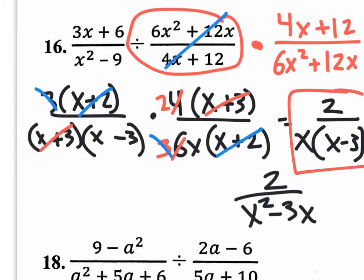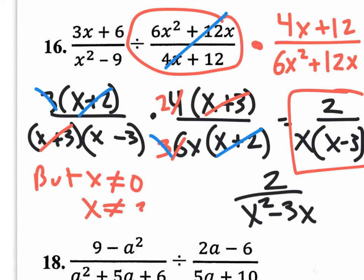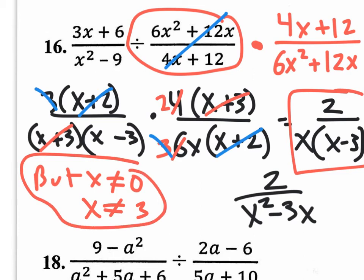If they asked you what values would make it undefined, you would say x cannot be 0, because if this were 0 then the whole denominator becomes 0. Or x cannot be positive 3 also. So these are the two extra details if they were to ask you what values make it undefined. Anyway, let's move on to number 18.